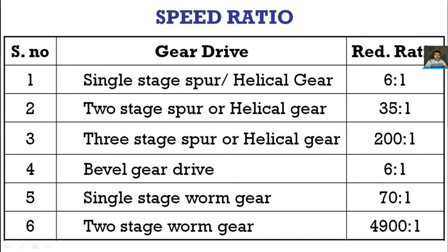Bevel gear drives are generally recommended for two intersecting shafts. Worm gearing is generally recommended for non-parallel, non-intersecting shafts — specifically when the shafts are perpendicular but not coplanar. Single stage worm gearing gives a maximum speed reduction ratio of 70:1, and when you consider two stages, you get a maximum of 4,900:1. This is the greatest speed reduction ratio possible among all gear drives — the two-stage worm gear drive.